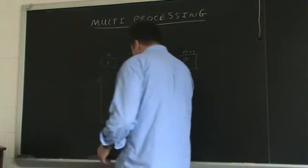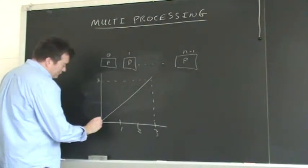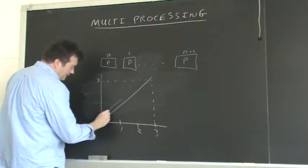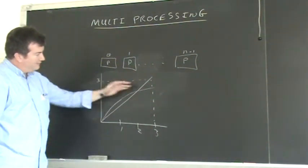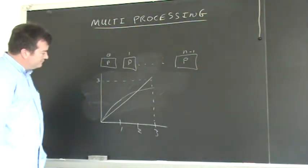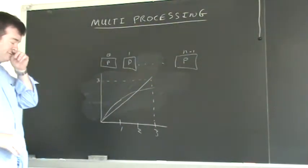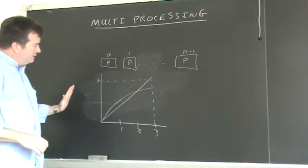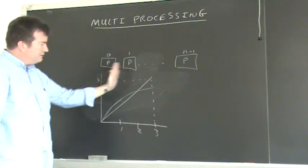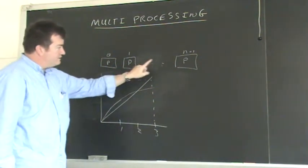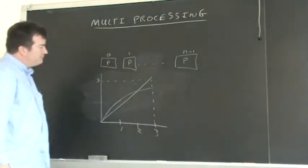Actually, we might even be able to get a little bit better than linear speedup — though it usually doesn't last long. We'd have to be lucky that our program could be broken up into three equally-sized chunks that we could distribute among our processors. If we balance the work perfectly and none of the parts are dependent on the others, we could actually do a little bit better than linear speedup.